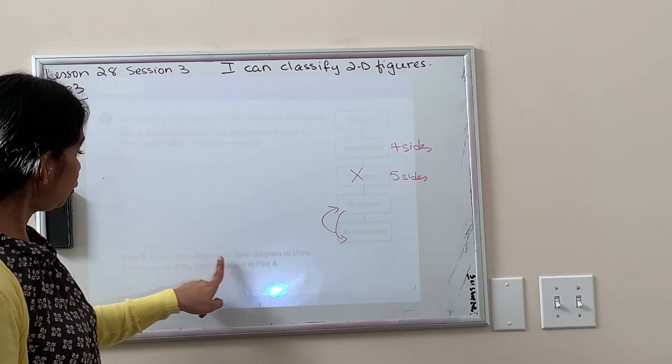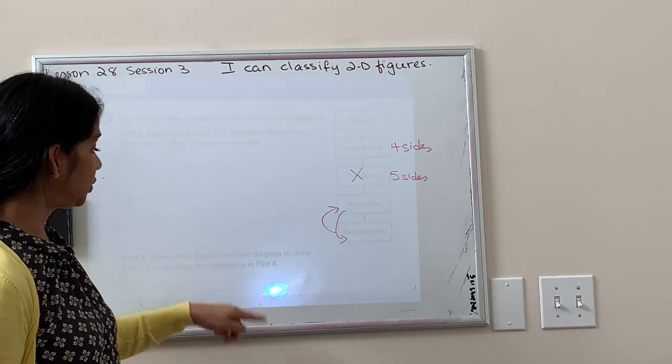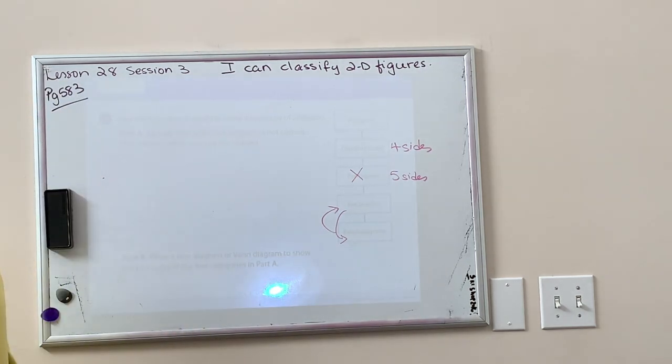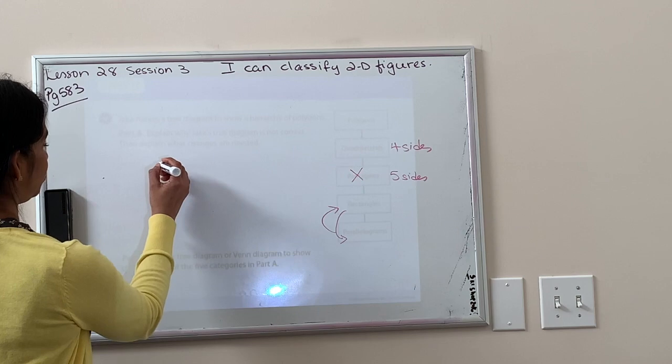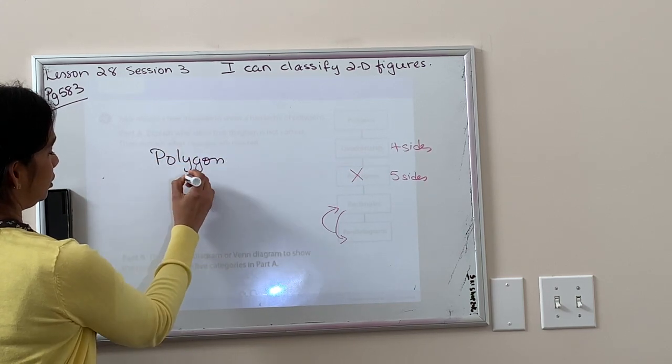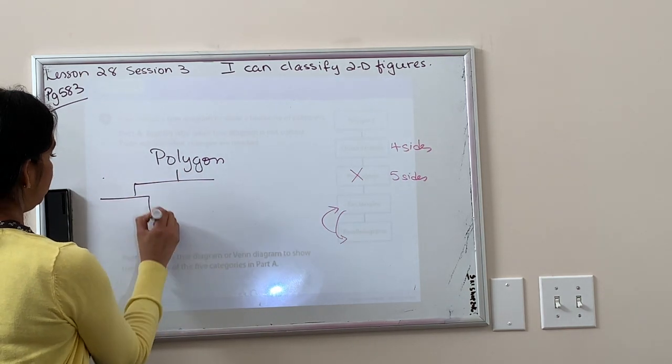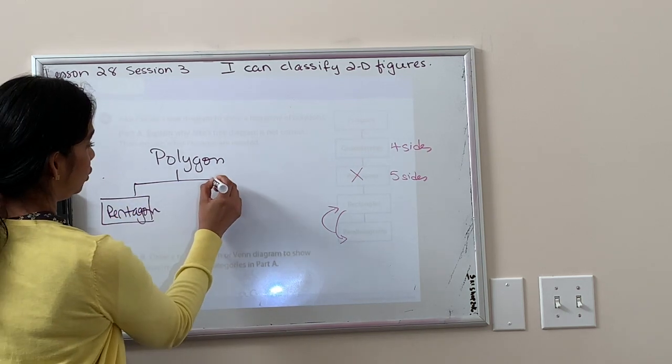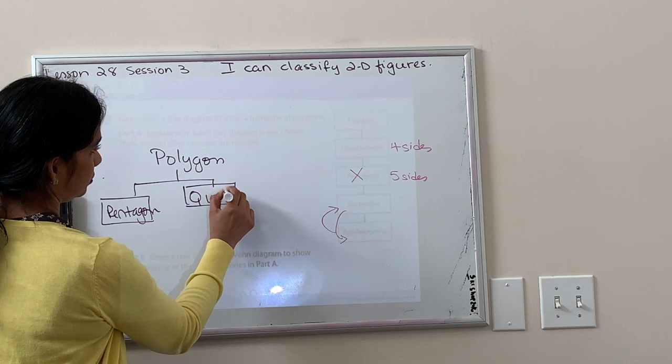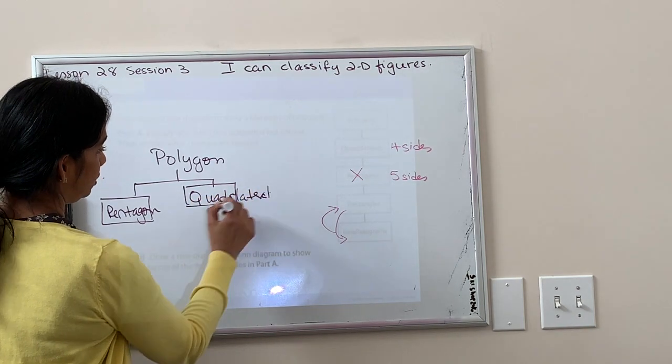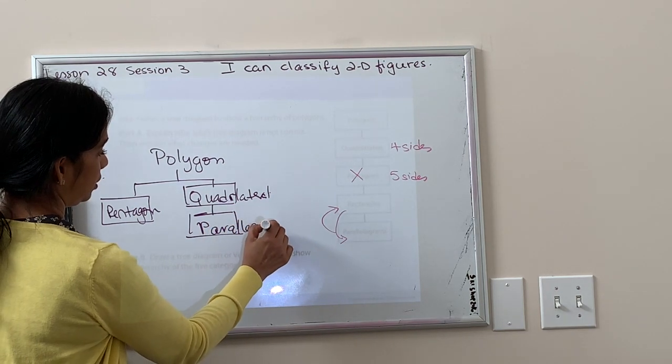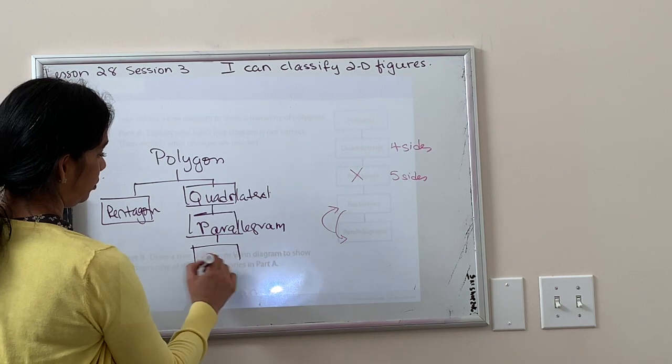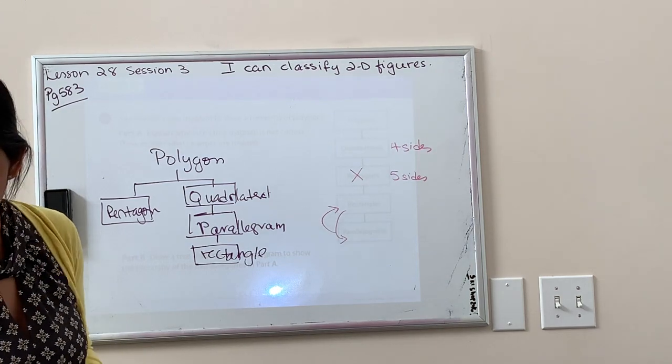And part B, draw a tree diagram or Venn diagram to show the order of the five categories in part A. Okay, let's do a tree diagram. So we're going to start with polygon. To accommodate the pentagon, I'm going to put the pentagon by himself. And then I'm going to start with quadrilateral. And then I'm going to go to parallelogram. And then I'm going to go to a rectangle.